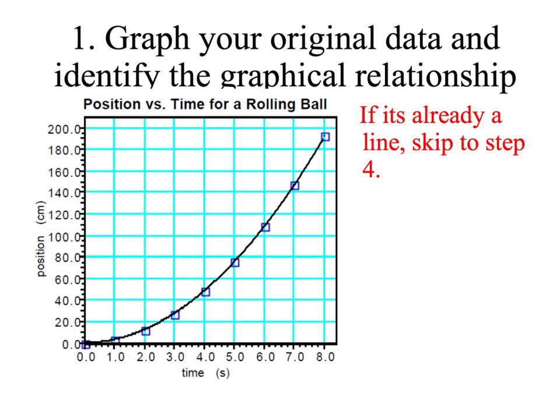Step number one is to take your original data, your X and Y data points, and make a graph of it, as we have shown already done here on the slide. You can make that graph by hand, or on your iPad using graphical analysis, or if you have access to Microsoft Excel, that works as well. You want to have the independent variable on the X axis, in this case that would be time, and the dependent variable on the Y axis, in this case that would be position.